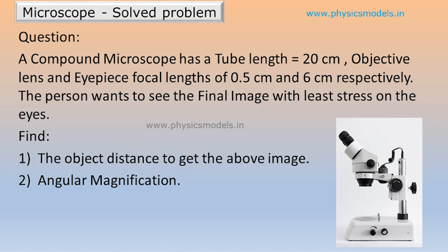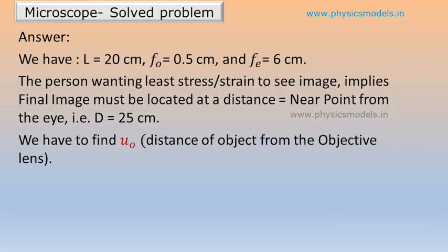We are given the tube length as 20 centimeters, we have the focal lengths of each of those convex lenses and we have to find out the distance of the object from the object lens and we have to find out the angular magnification. We write the terms clearly,